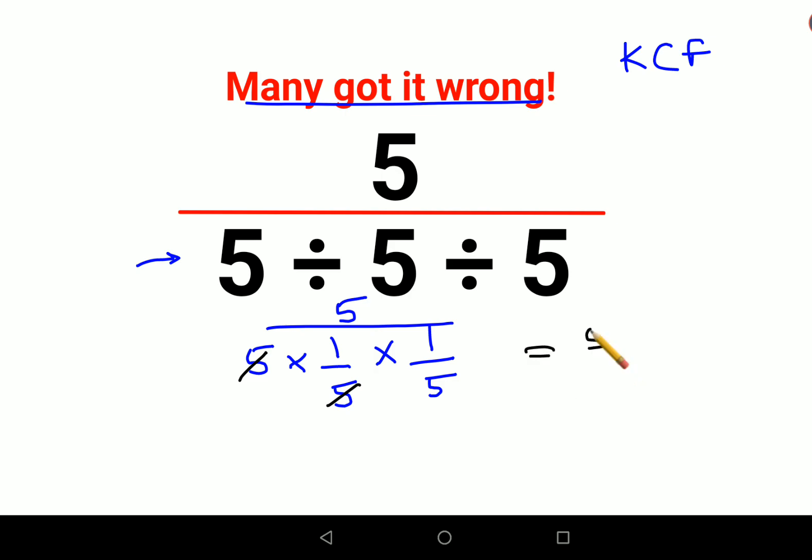5 upon 1 upon 5 can be written as 5 divided by 1 upon 5. Using the same logic, we'll keep 5 as it is, change the division sign to multiplication, and flip. The reciprocal of 1 upon 5 is 5.